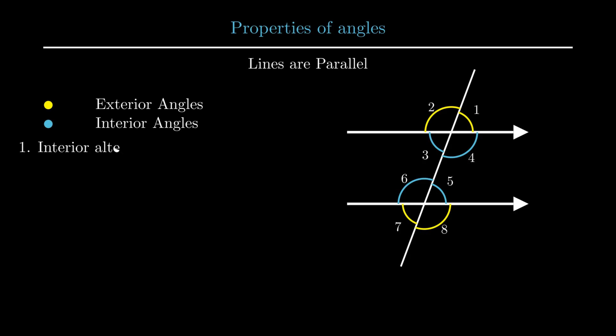Let's start with our first property that states, if lines are parallel, the interior alternate angles are equal. From the figure, angle 3 equals angle 5 and angle 4 equals angle 6.